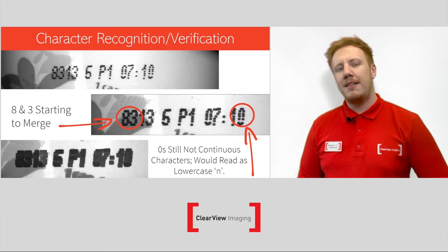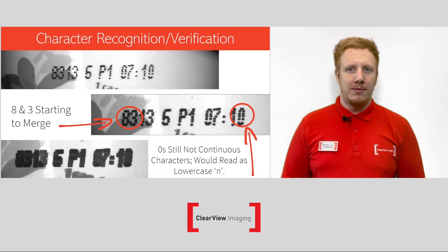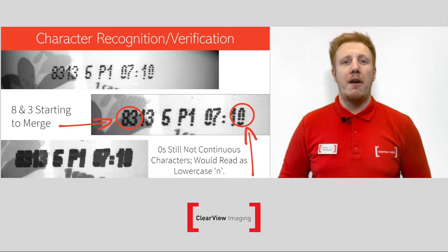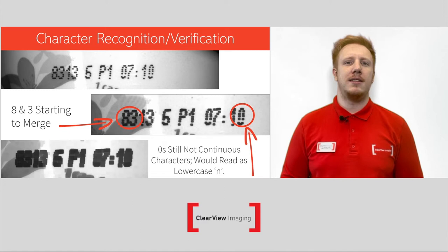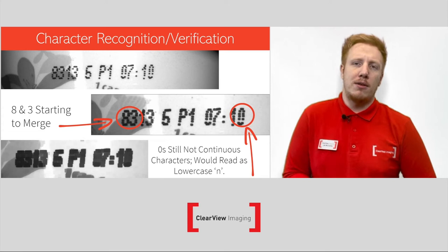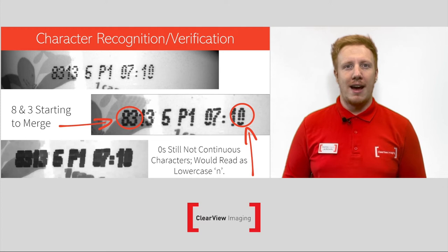Here we are looking at character recognition and verification. Inkjet printing is often used on the side of food and beverage products. For the human eye, it's very easily read. However, for a machine this isn't so easy, with the varying background, the gaps, the lighting changes, and a lot of other factors inhibiting its ability. Traditional character verification programs use a pre-processing step to join the dots to read these characters, which you can see starting to happen in the middle line. As you can also see, this is starting to cause issues — the 8 and the 3 are beginning to merge together, but the 0 at the end is still not a continuous character, meaning it's unable to be read.